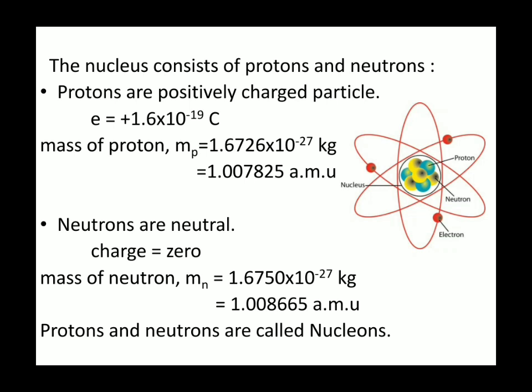Whereas the neutrons are the neutrally charged particles. They have no charge. And they have a mass of 1.6750 times 10 to the power minus 27 kg or 1.008665 atomic mass unit. And these constituents of the nucleus, that is the protons and neutrons, they are called nucleons.